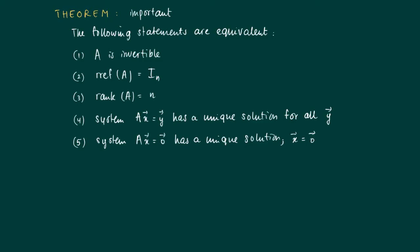The following theorem will turn out to be very important and we'll use it frequently. The first statement is that A is invertible, and it implies that the reduced row echelon form of the matrix A equals the identity matrix.